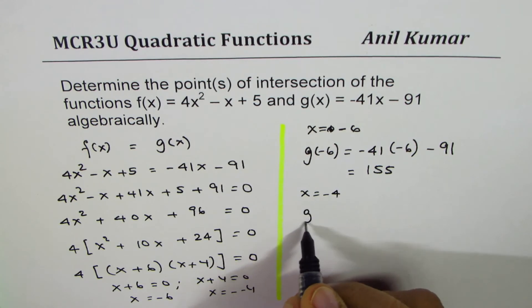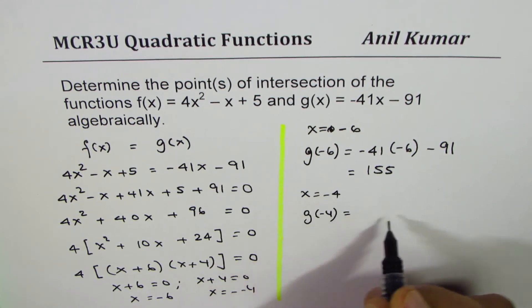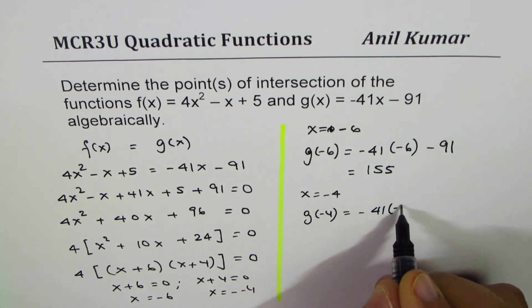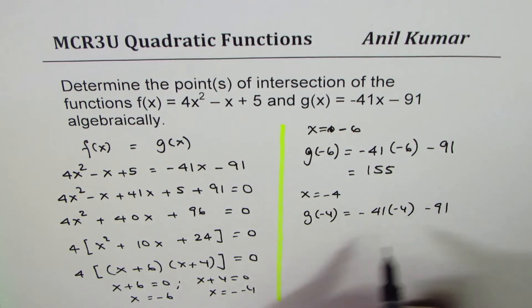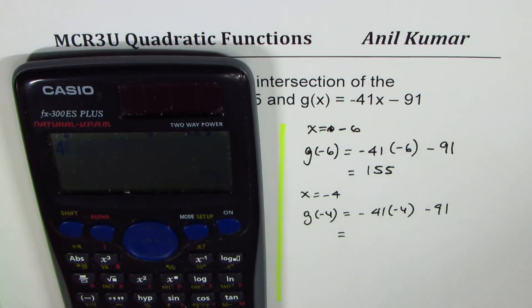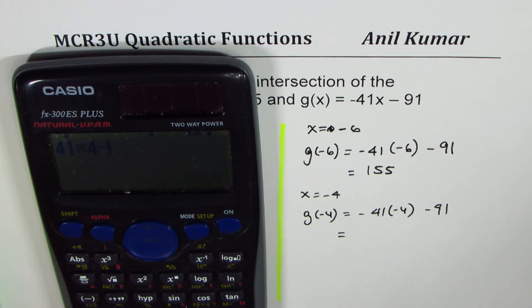That means we can calculate g(-4) = -41(-4) - 91. And that is equal to, so this time we'll do 41 × 4 and then take away 91.